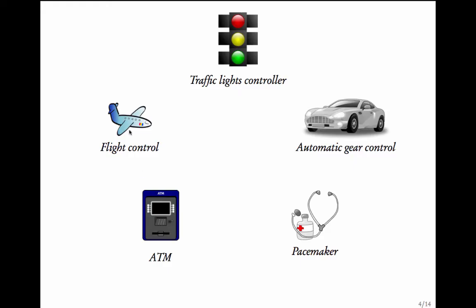Now let us get into an airplane. An airplane contains a lot of code. It has programs that decide its trajectory based on inputs like location, weather, etc.